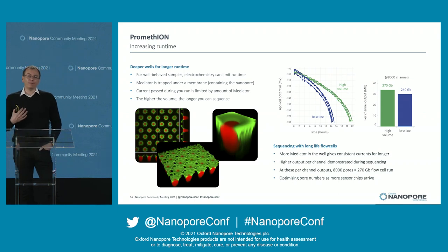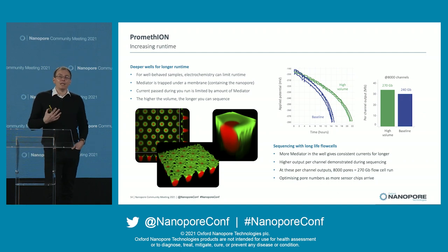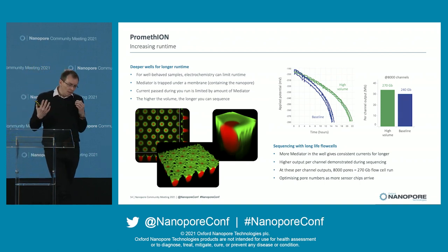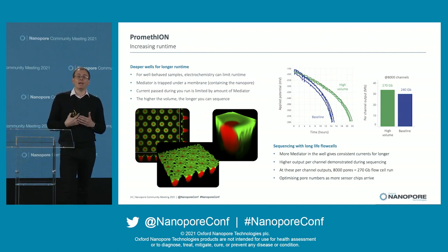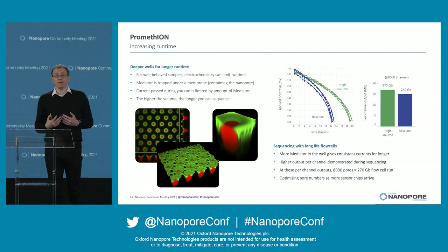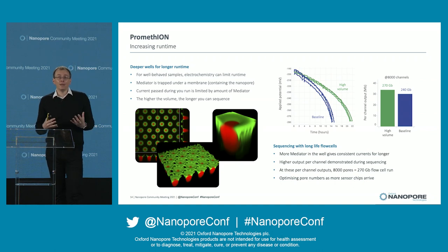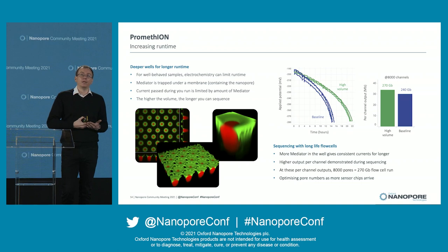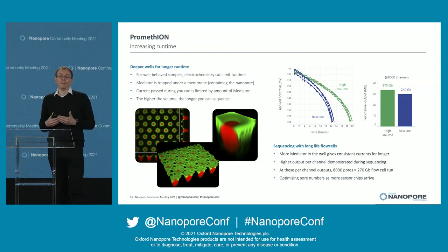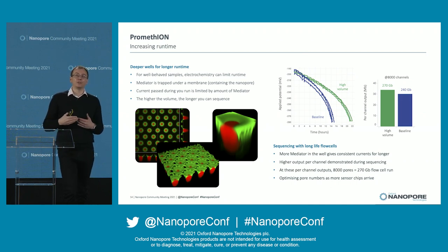We want to improve on that and give even more output. You might not know that MinION actually has slightly bigger wells than Promethium — on Promethium we pack everything together for a very high density of channels. We have something called a mediator that sits underneath the membrane of each channel — it's a bit like battery life, it's the fuel, and as you pass current it gets consumed. We've made some tweaks to the Promethium sensor array: we've increased the volume of that well, which gives us more run time. We're having to compensate for the mediator less because, although we're passing the same current, we've got a higher volume — proportionally, we're changing it less.